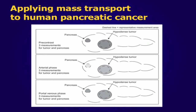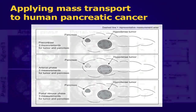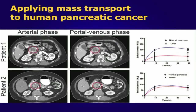We developed a new mathematical model to describe the changes in density as a function of time. Using this method, we derived multiple transport properties such as an initial intravasation rate, a maximum enhancement, and an area under the enhancement curve, or AUC. As an example, two patients with adenocarcinoma in the head of the pancreas are depicted in this slide. Patient one has a tumor that does not enhance much relative to the normal pancreas, and you can see that in the CT scans on the left as well as in the measurements on the right. The mathematical model captures this behavior, shown in the red and blue lines for tumor and normal pancreas, respectively.